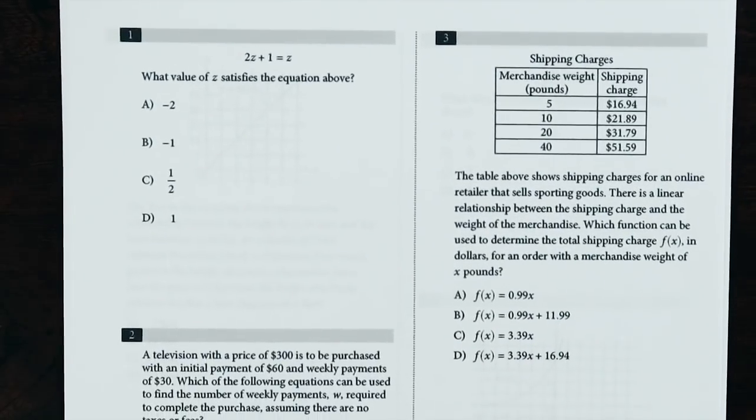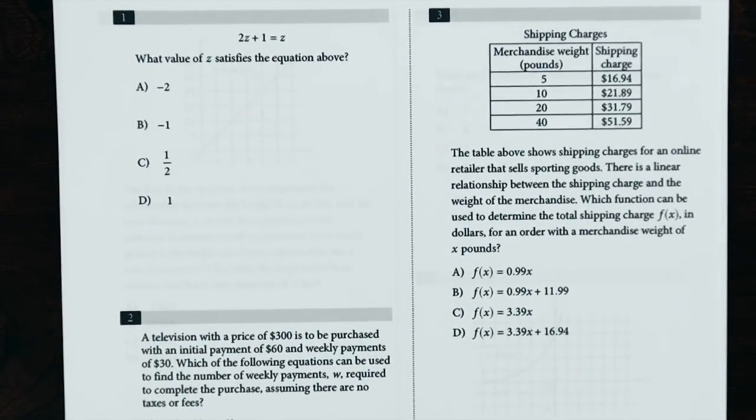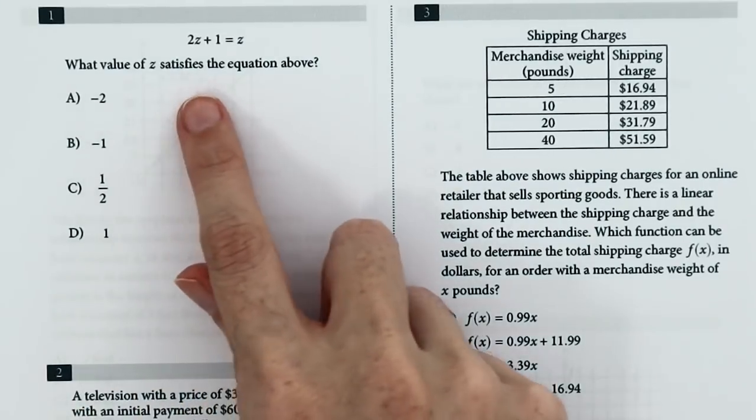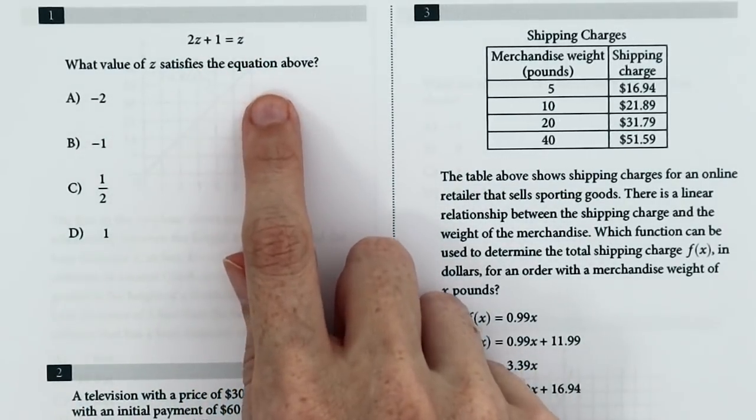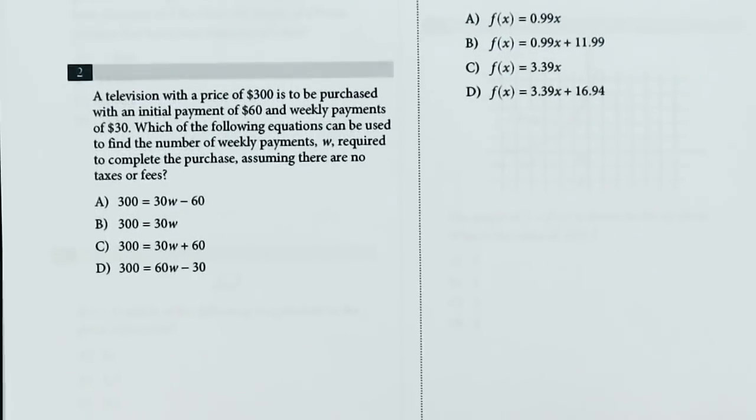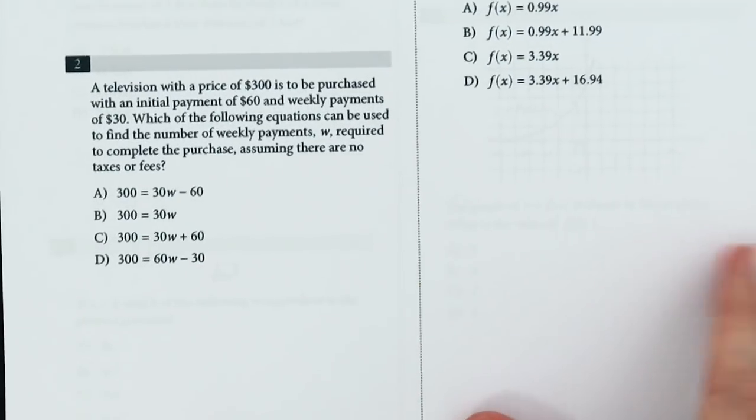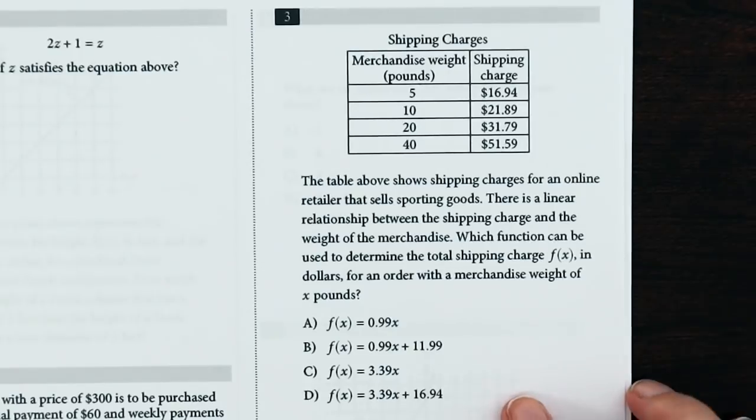So here's the math questions and they do start off pretty easy. We have finding the value of an unknown in a simple equation. So we've got algebra, some algebra again here but more of a word problem and working out a linear relationship from this table.